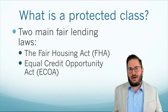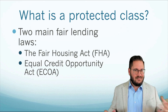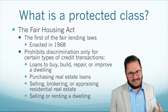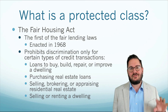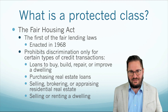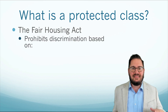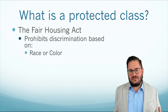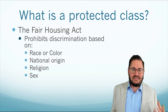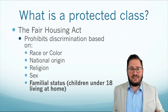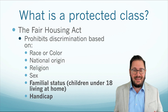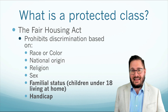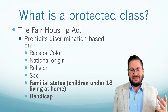Each of these laws actually defines a protected class a little bit differently, so let's take a look at each. The Fair Housing Act dates back to the late 1960s and covers fair housing — loans related to a dwelling and housing for individuals. Under the Fair Housing Act, a protected class includes race or color, national origin, religion, sex, familial status (which includes children under 18 living at home), and handicap.